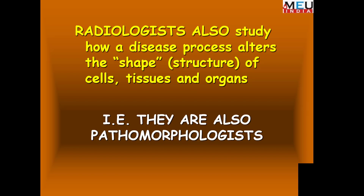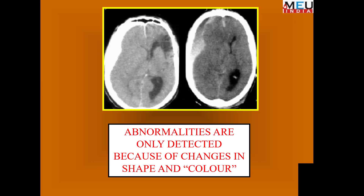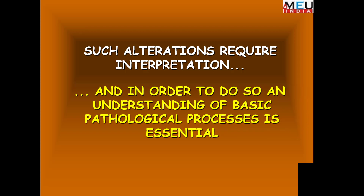There is another branch of medical science that also studies the disease process by examining changes in the shape or structure of cells, tissues, and organs — the radiologist. In some form, they are also pathomorphologists, only they use different means to study these structural changes: X-ray, ultrasound, CT, or MRI. In radiology, changes are detected by the change in shape, color, and other alterations, which all require interpretation, and to do so we must understand the basic pathological process.